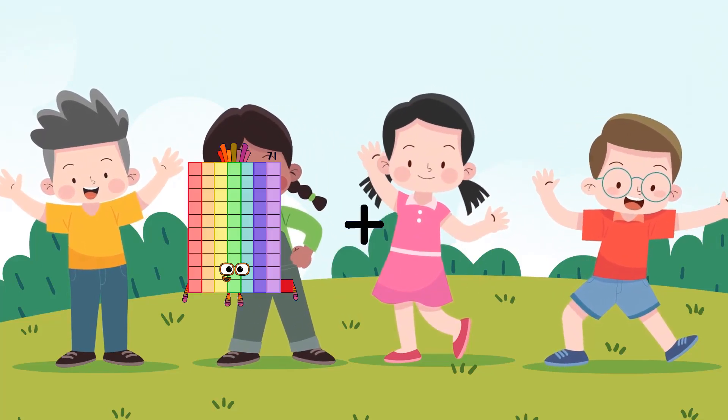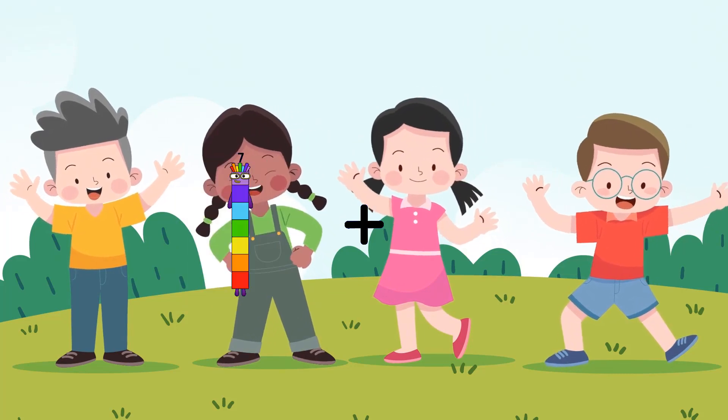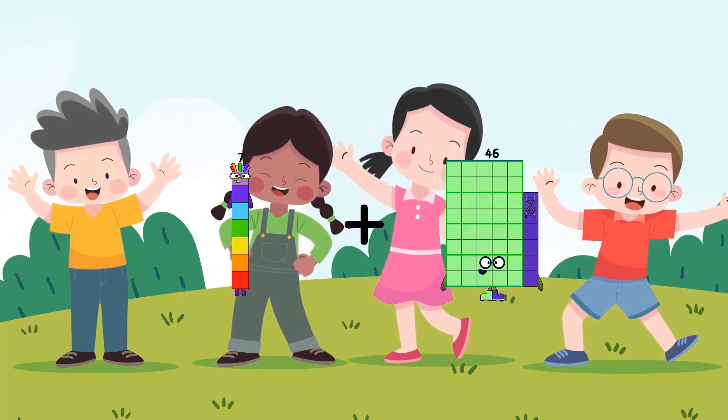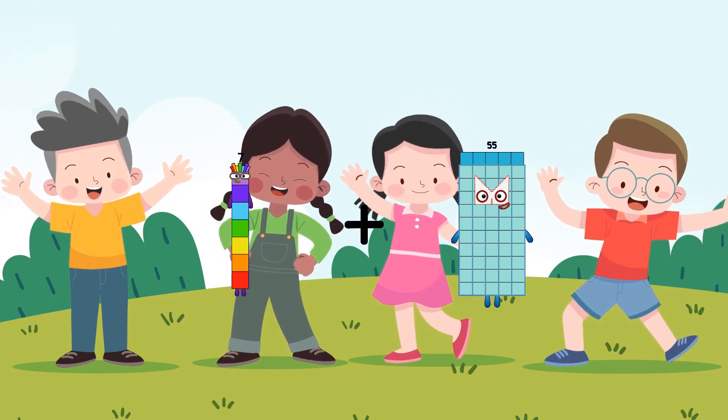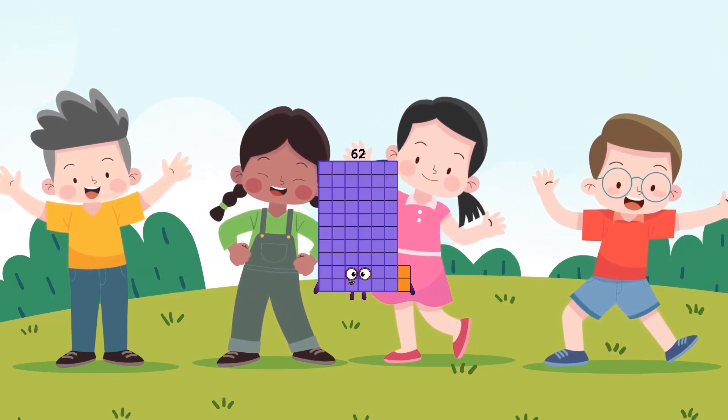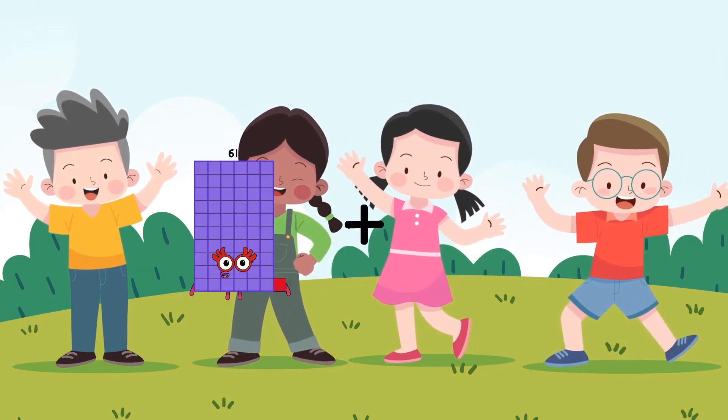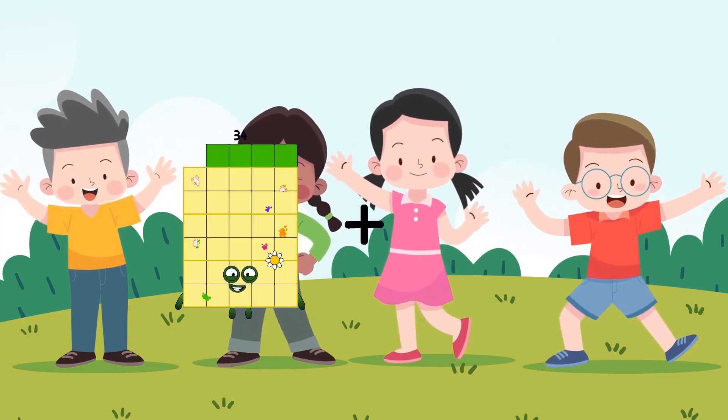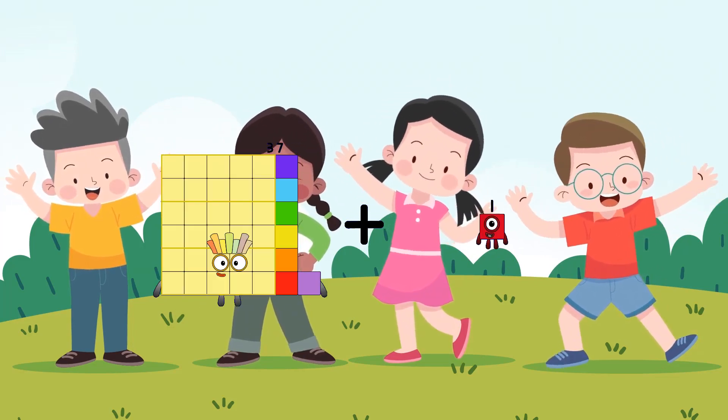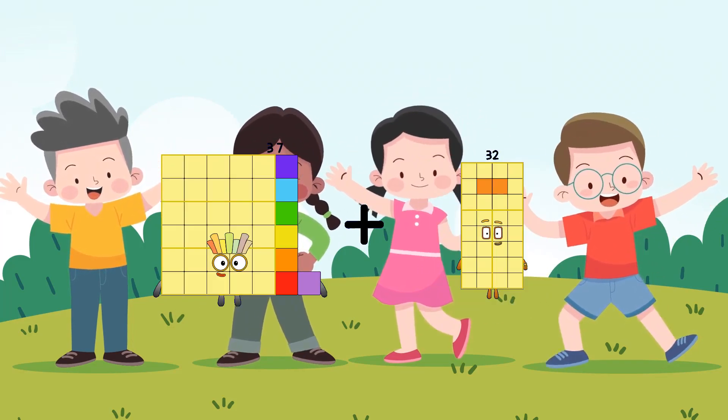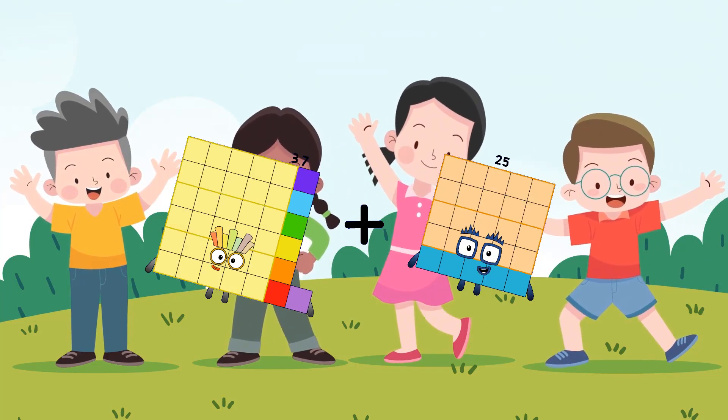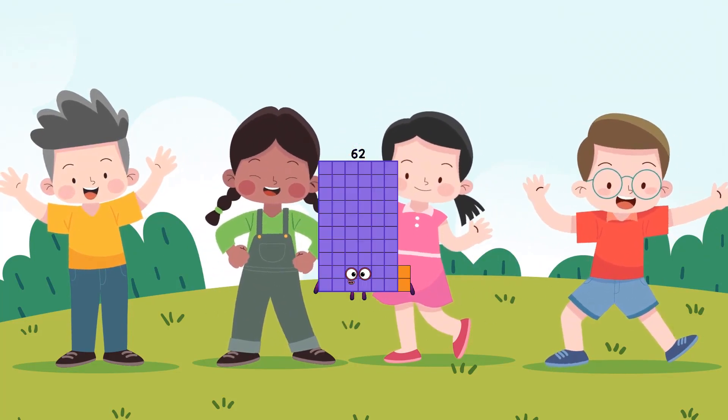7 plus 55 equals 62, 37 plus 25 equals 62.